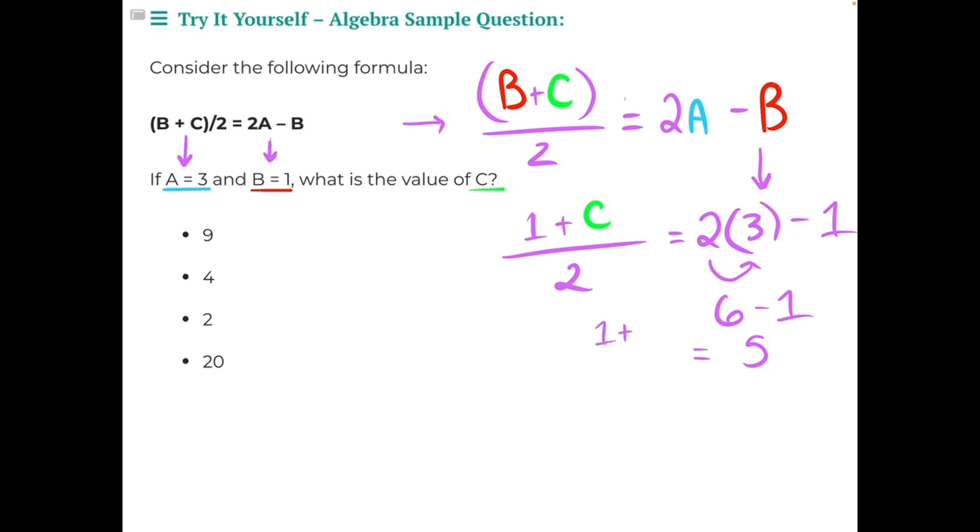So 1 plus, I'll keep c green so that it's easy to see what we need to isolate, divided by 2. We've simplified the right side of the equal sign as much as we can, so we need to focus now on the left side of the equal sign.